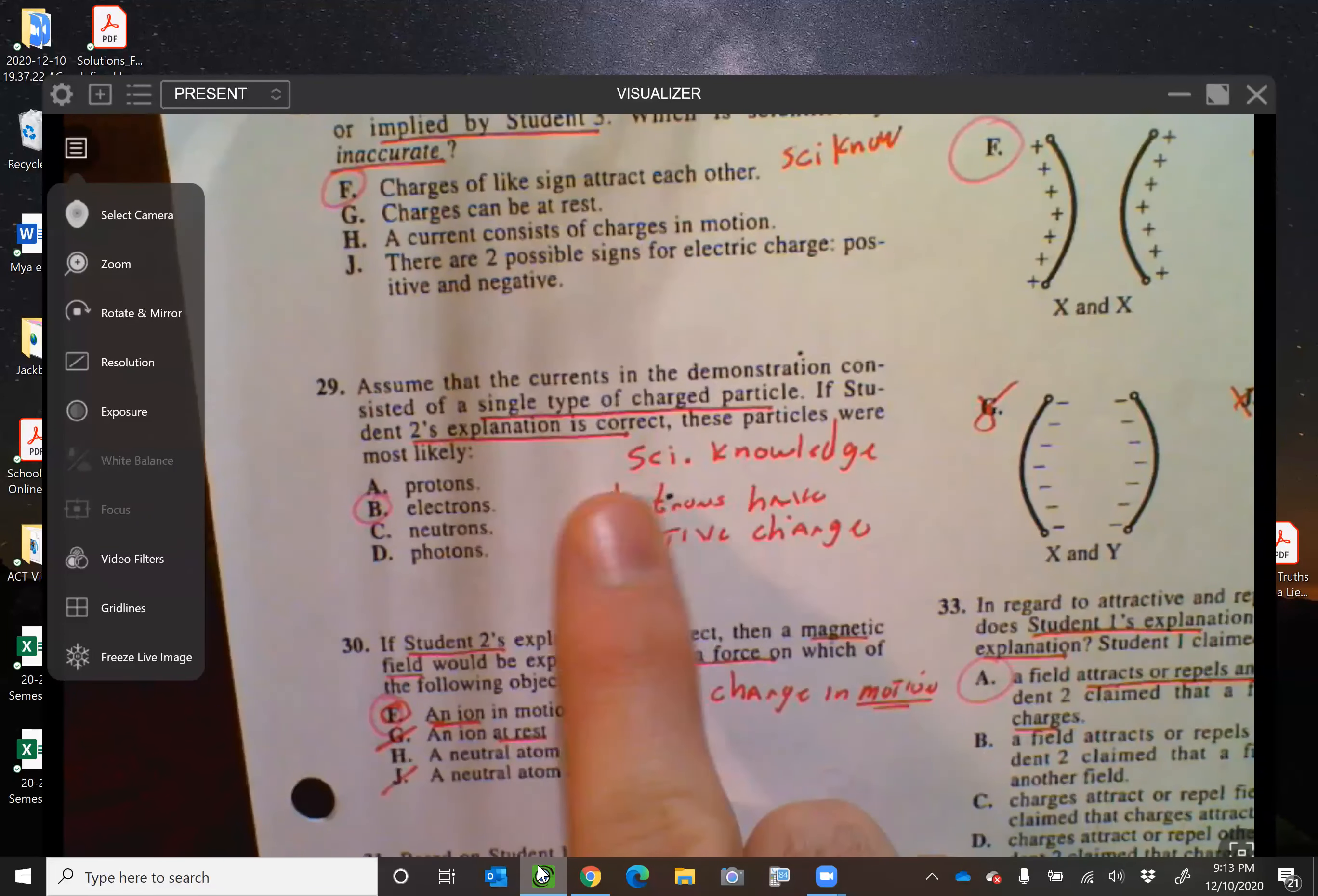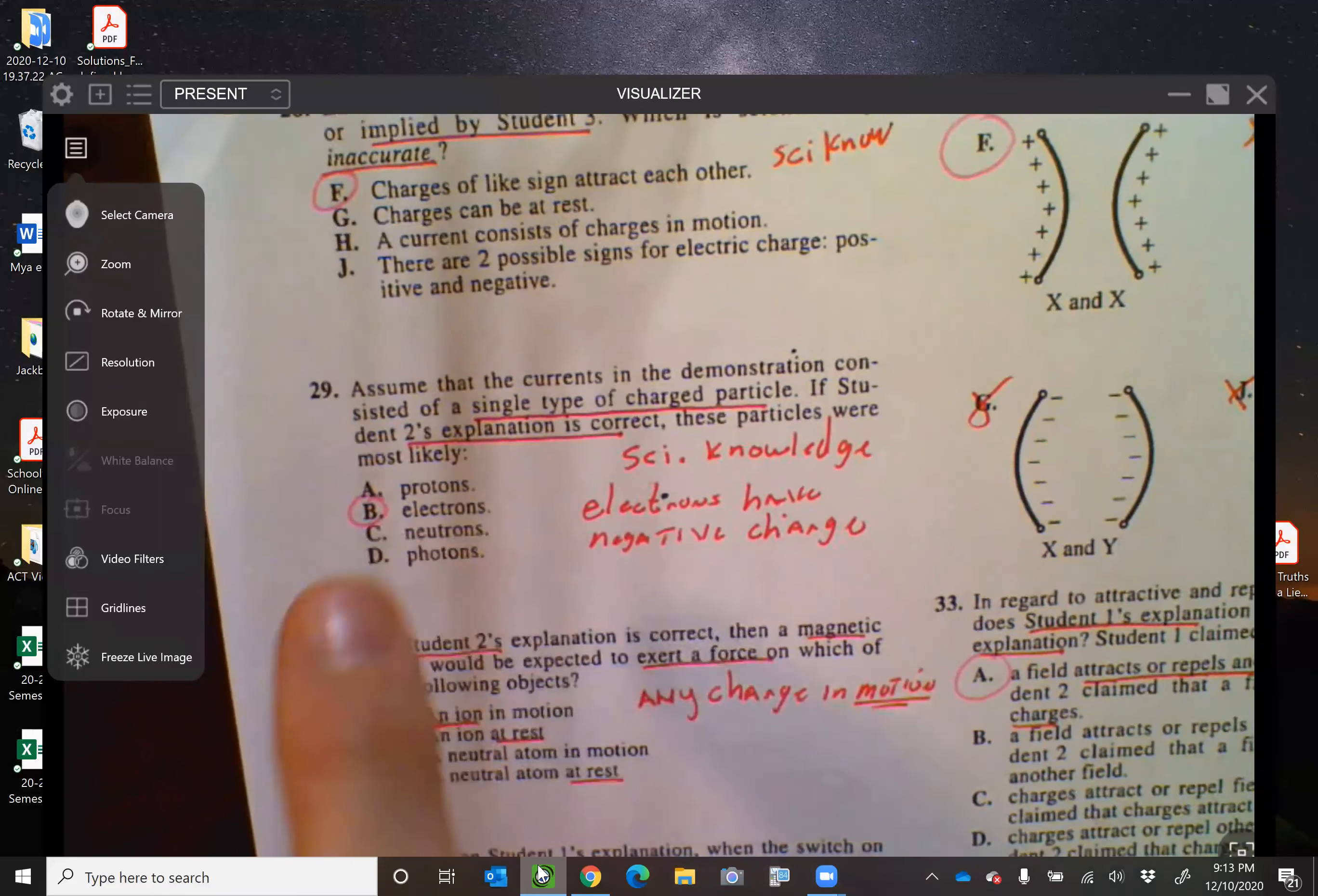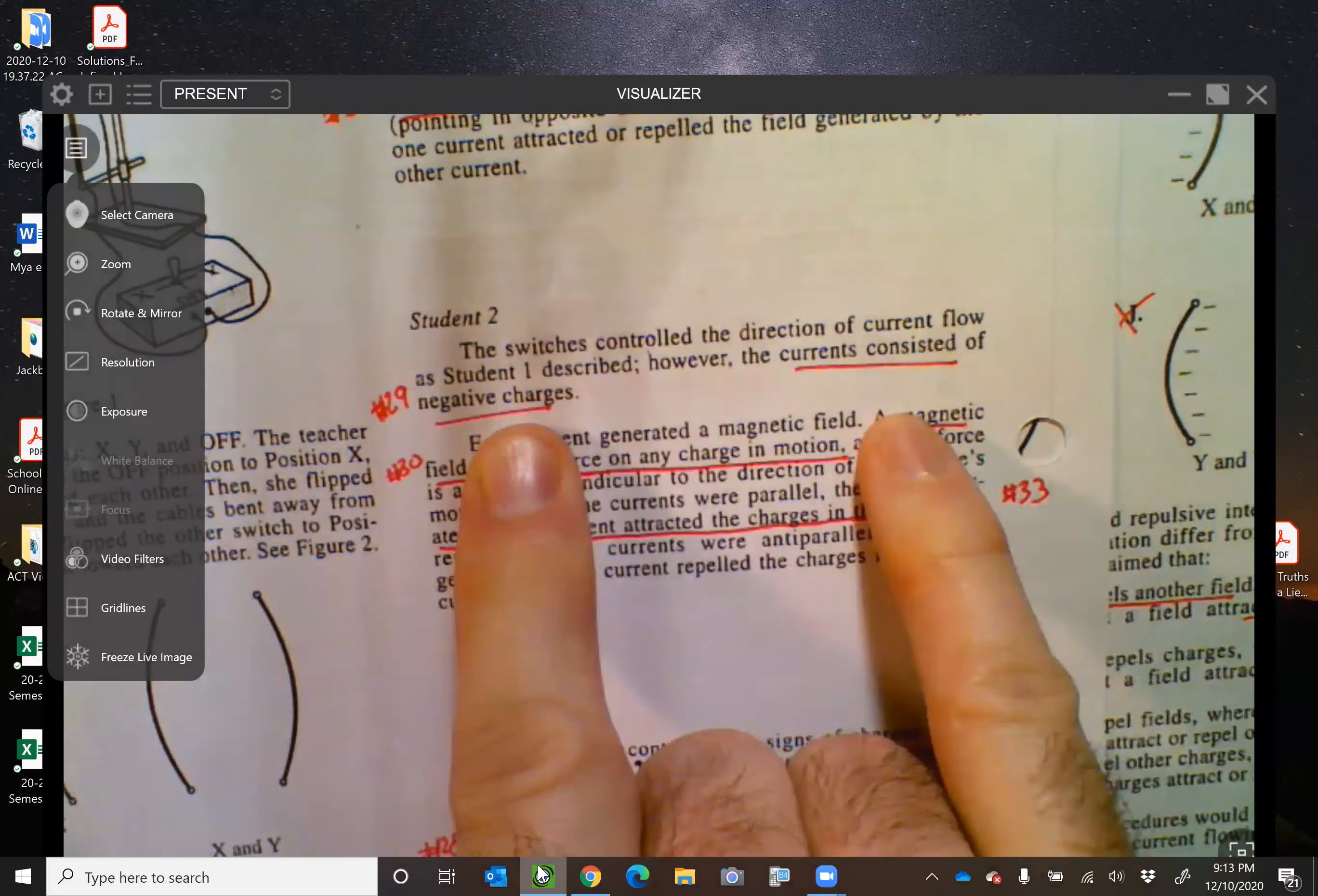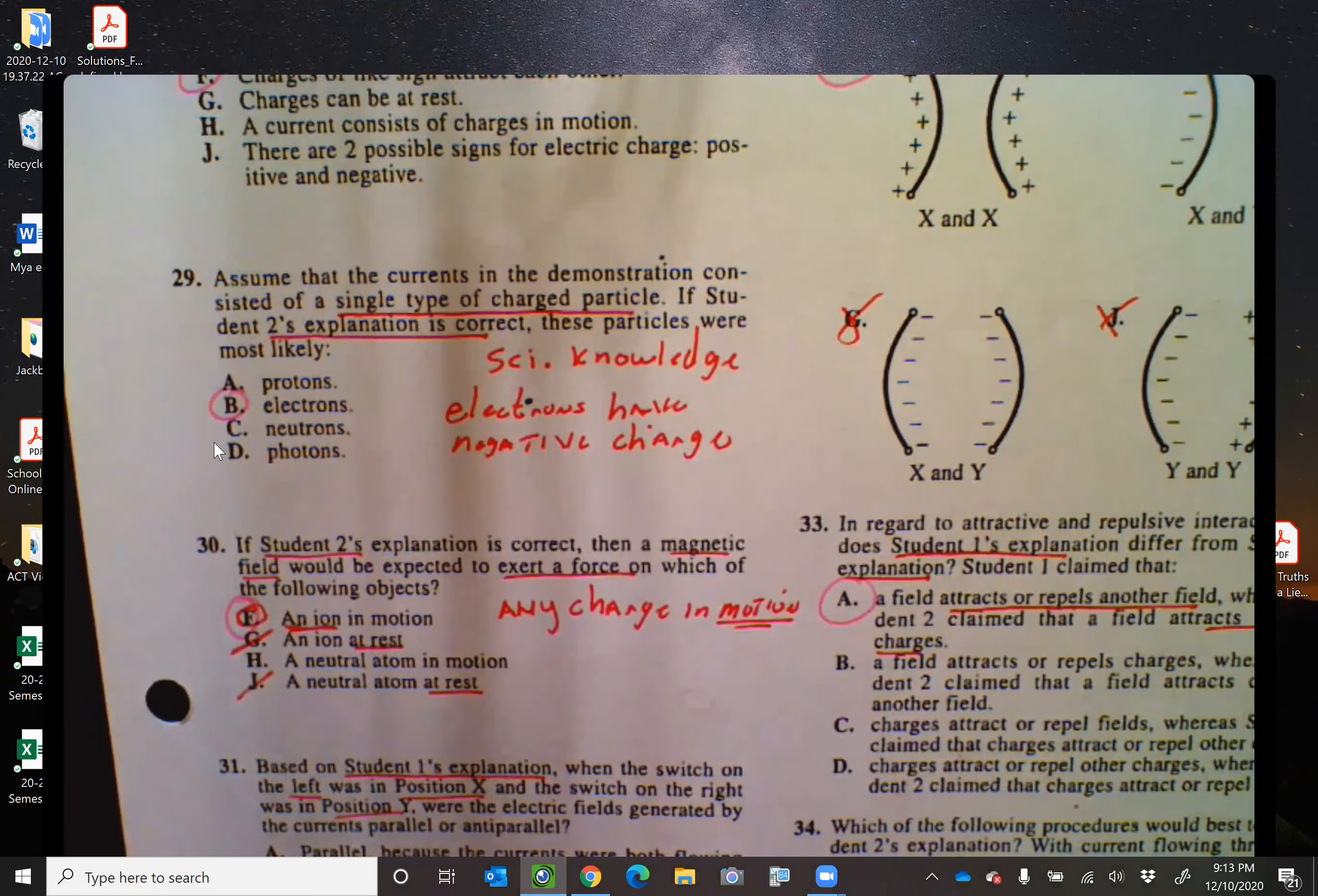Number 29. Single type of charge particles and student two's explanations correct. These particles were most likely what? Well, it's a science knowledge. The answer should be electrons. And if we look here, we can see right here, the currents consisted of negative charges. Well, what has a negative charge? An electron does. So that's how we know it's got to be the electron, because it says negative charge. And that's science knowledge.